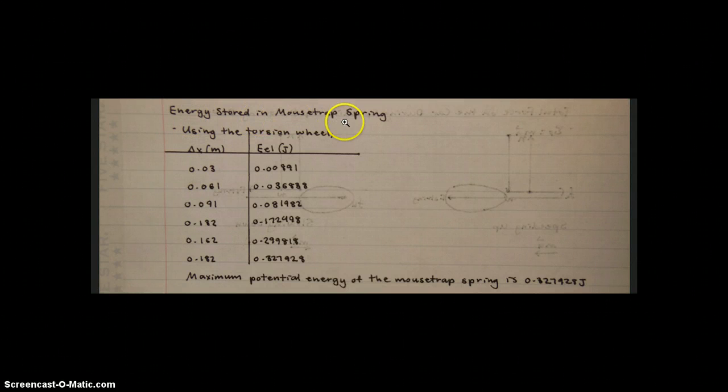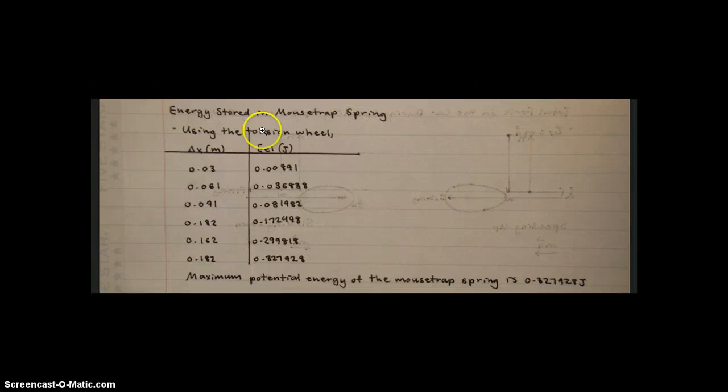Energy stored in the mousetrap spring. Because the spring doesn't travel in a straight forward path, it travels in an angular path, we have to use the torsion wheel to analyze the car as if it were traveling in a straight forward path.